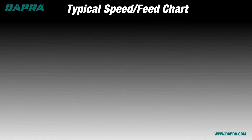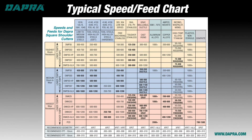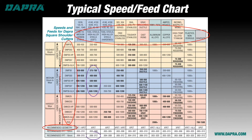Taking another look at our recommended speeds and feeds chart, once we've found our material group and chosen a carbide grade and cutting geometry, we look for the speed and feed ranges. Notice in our example that the speed ranges for tool steels varies by about 400 to 500 SFM, and the feed range varies by 6 thousandths. How do we know where in these ranges to start? Let's look at some general concepts about speed, cutting forces, and heat.